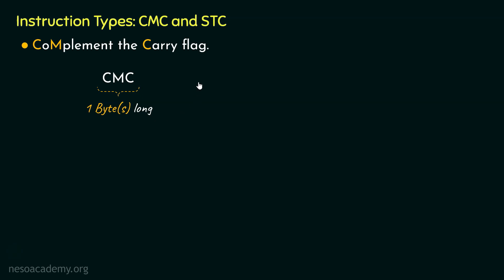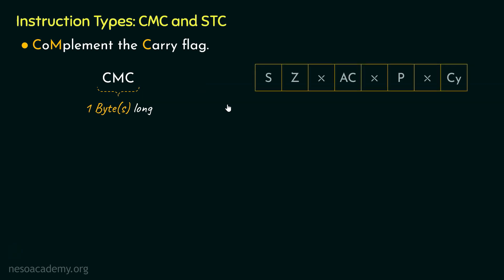Let me show you how CMC works. Say within the flags register, initially the carry flag is set — that is, its value is 1. Execution of the CMC instruction will complement the value within the carry flag. Since it is 1 prior to execution of CMC, after the execution of CMC it will be complemented and the carry flag will now be reset to 0.